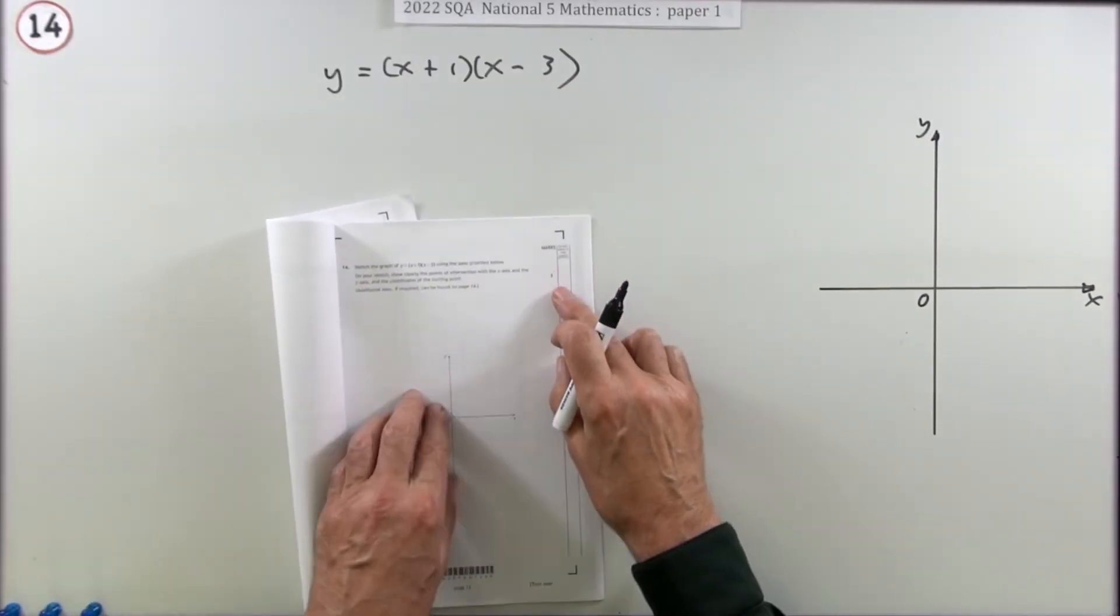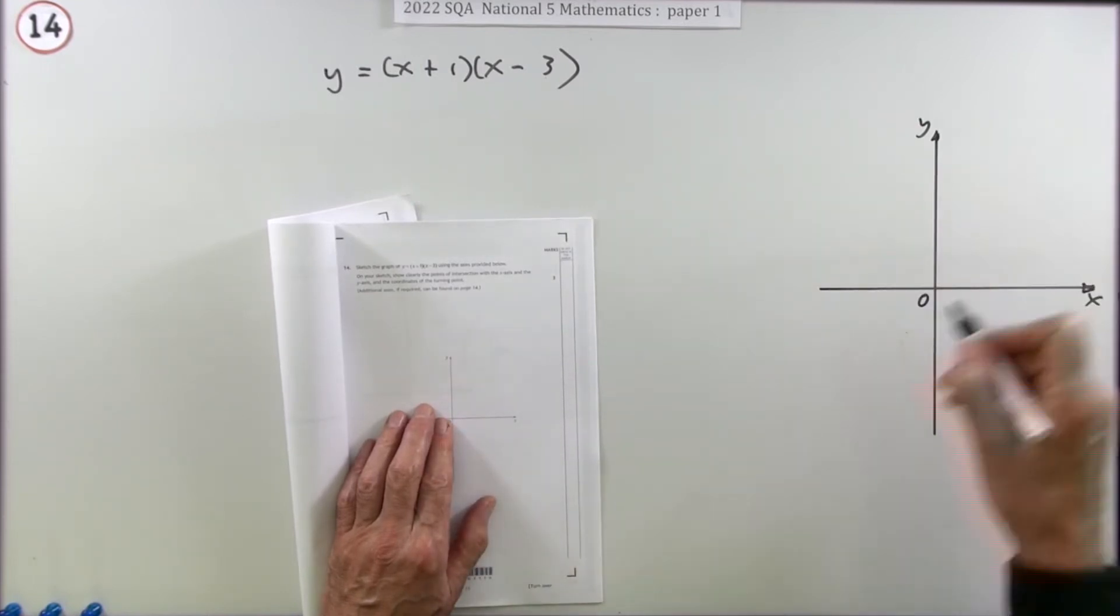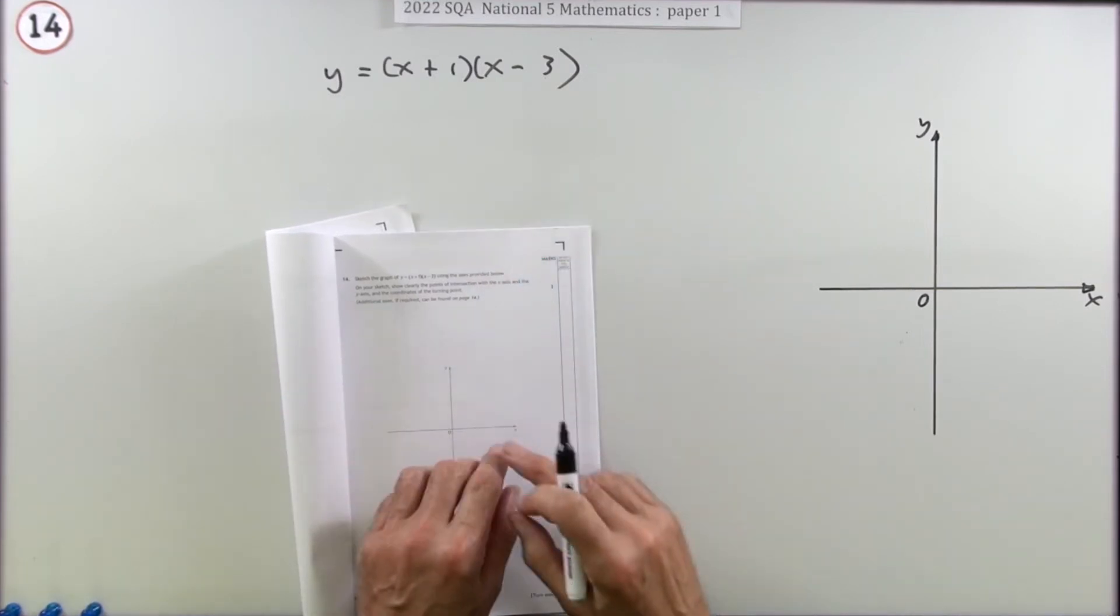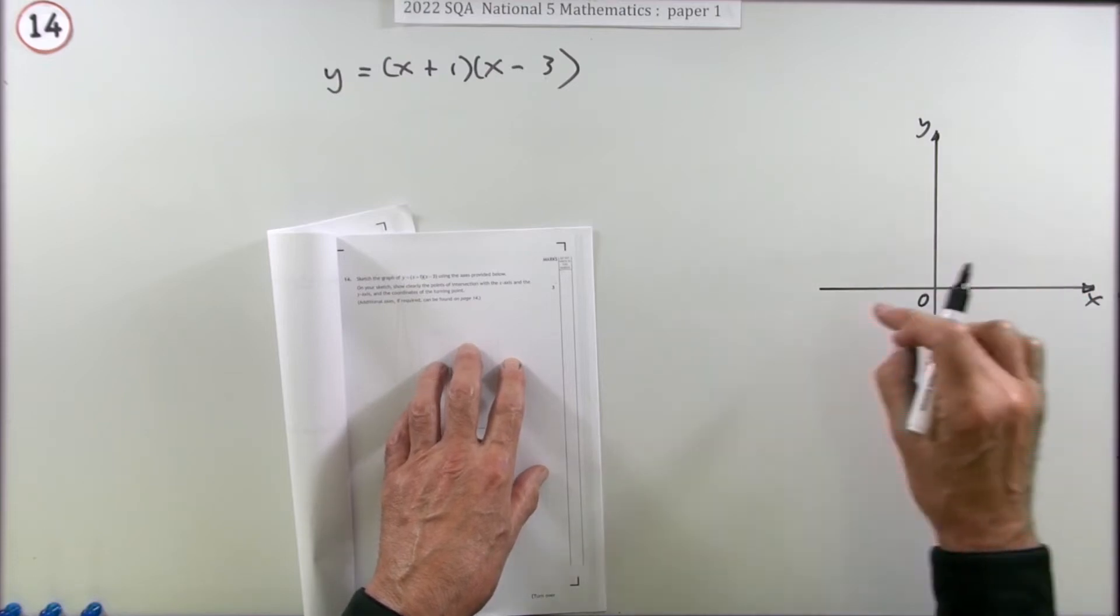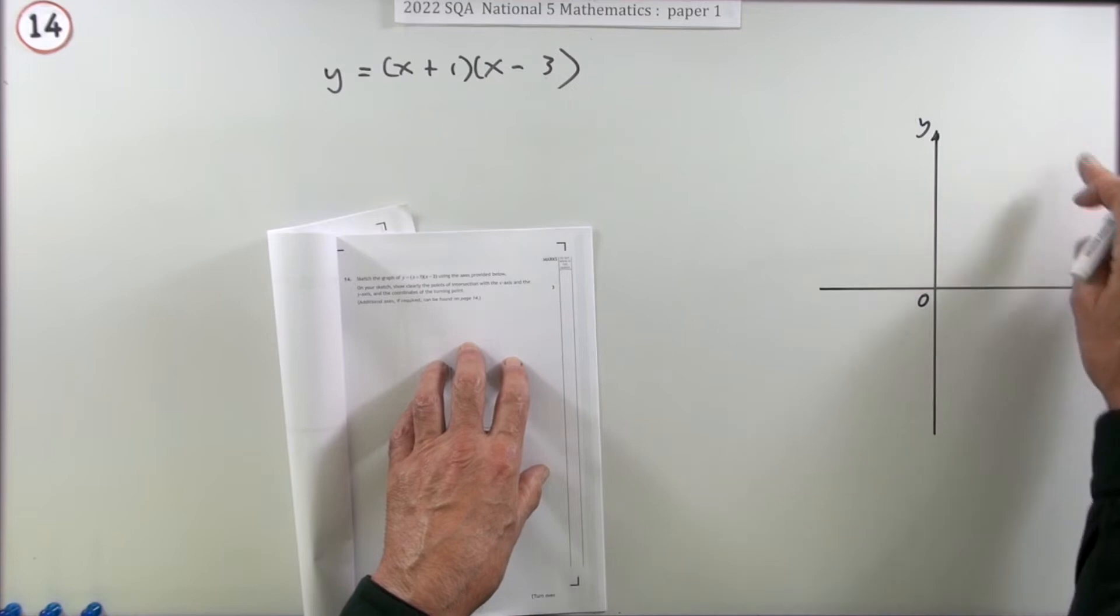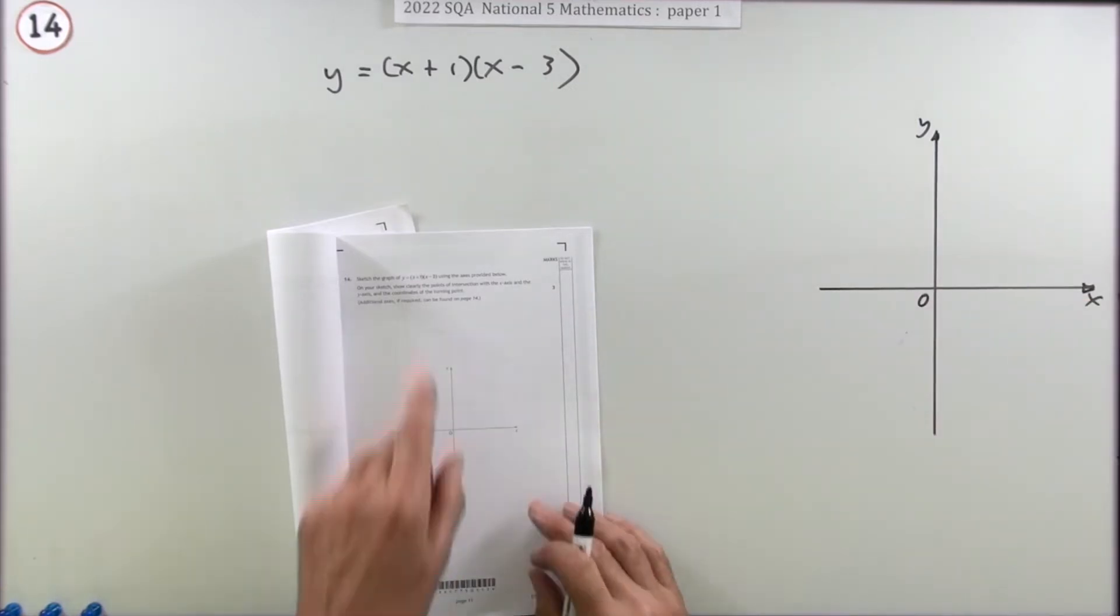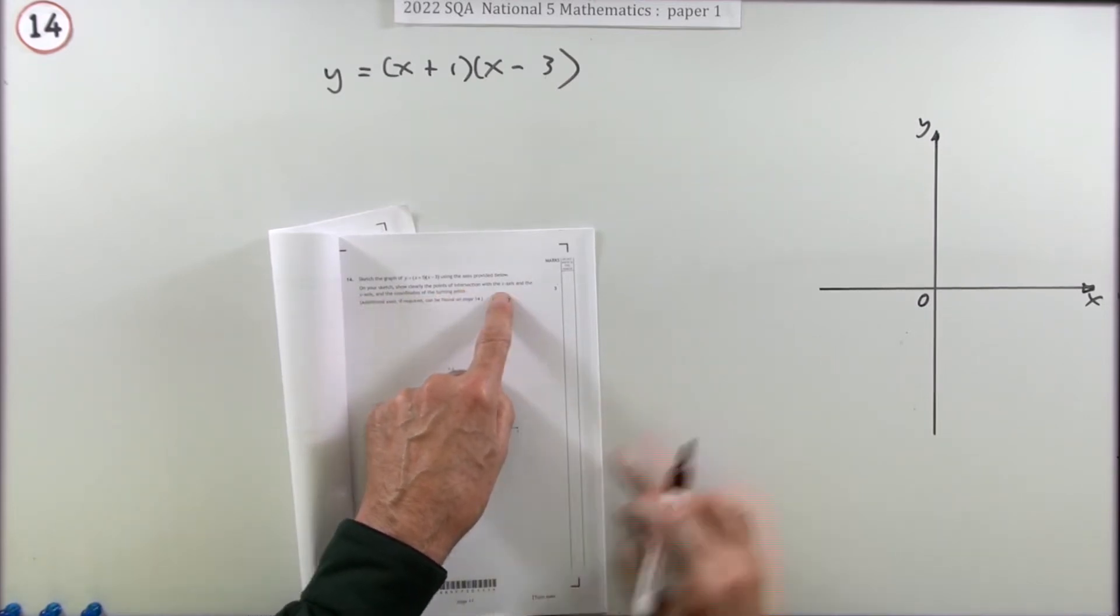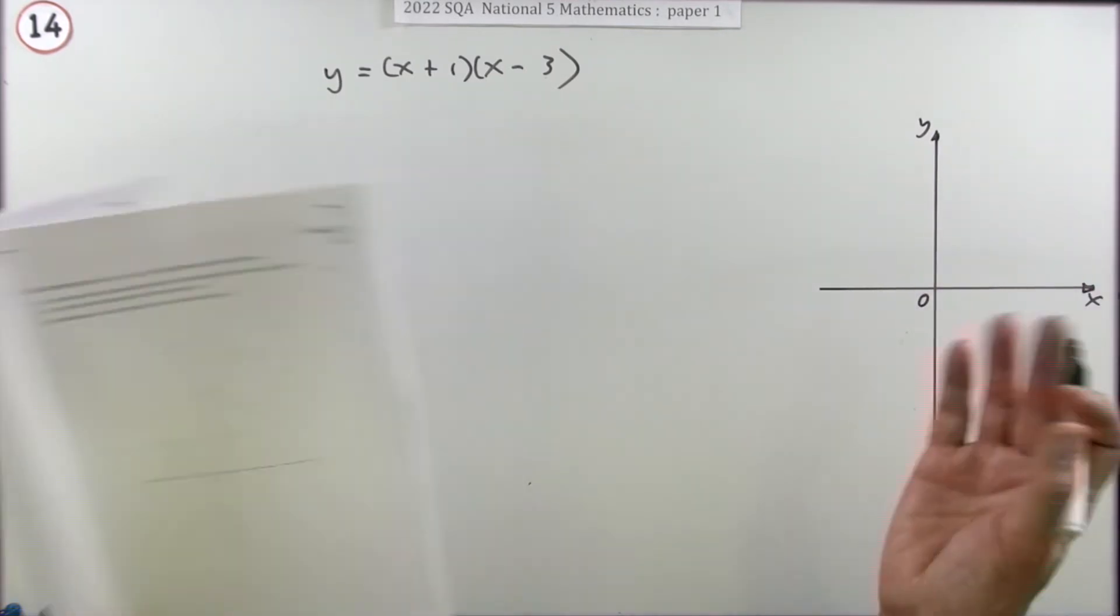Number 14, for three marks, sketch the graph of a quadratic - that means you'll be drawing a parabola. And it even tells you what to do. You should know what to do with any sketch anyway. If you're going to sketch a graph you show the important features: where does it cut the x-axis, where does it cut the y-axis, and where are there any turning points? It even tells you on your sketch show clearly the point of intersection with the x-axis and the y-axis and the turning point, and that's what the three marks are for.